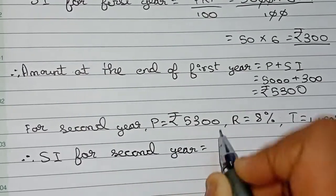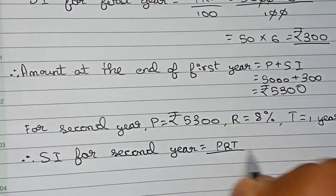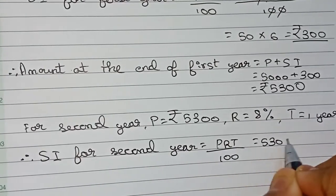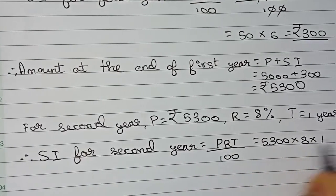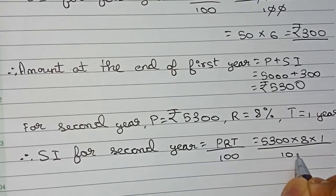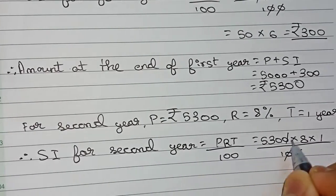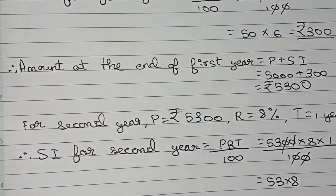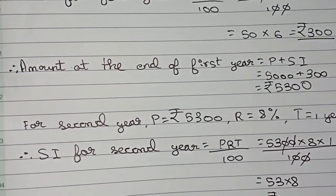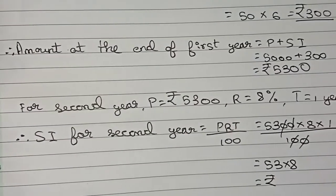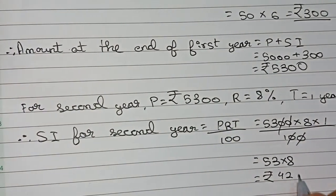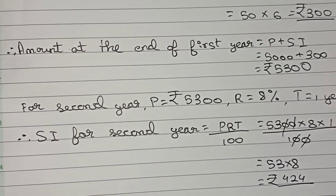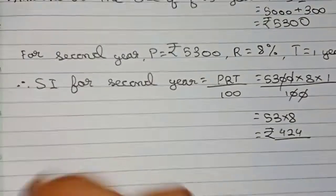Therefore, SI for the second year using the same formula P×R×T by 100, putting in the values and cutting the zeros, we get 53 into 8, which equals rupees 424. So this is the interest for the second year.